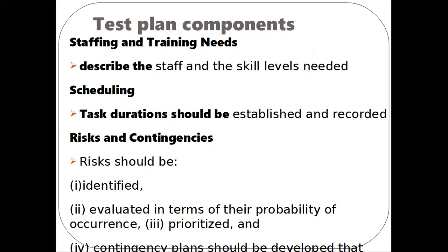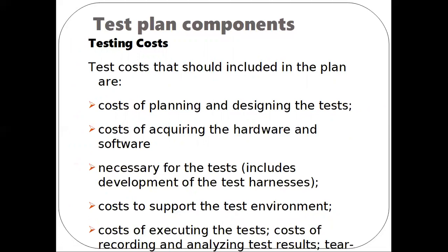The next component is risk and contingencies. Every project has a risk associated with it. The steps to manage risk are: first, identify the risk; second, evaluate the risk in terms of probability; third, prioritize the risk; and finally, develop a contingency plan in case the risk occurs. The next component is testing cost, which is an important factor to be maintained in the project management plan. The project manager, along with the developer and tester, will do cost estimation. Costs include planning and designing tests, acquiring hardware and software, the test harness, supporting the environment, and executing, recording, and analyzing the tests.